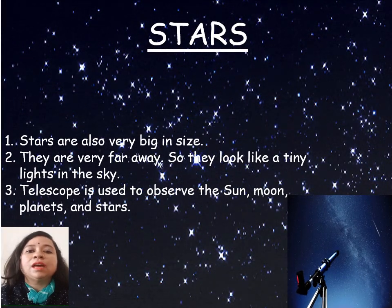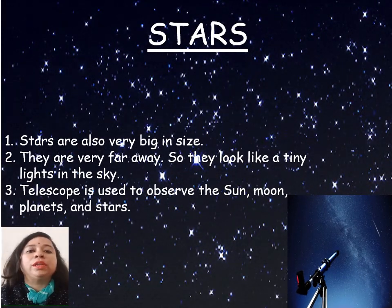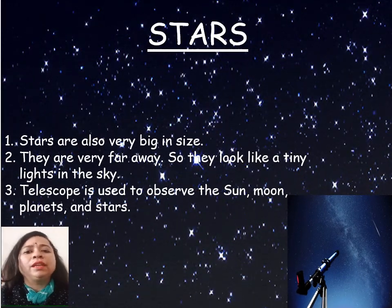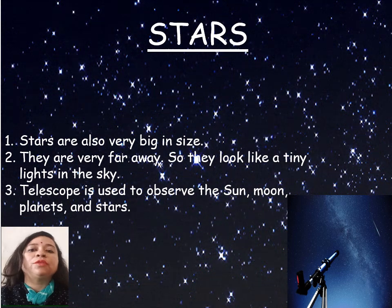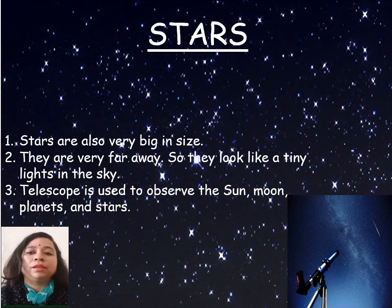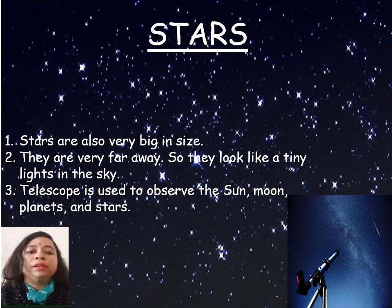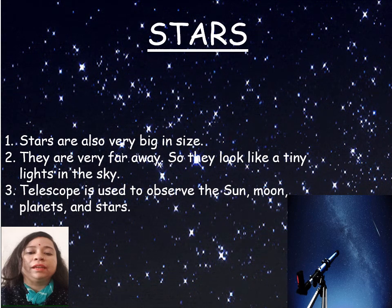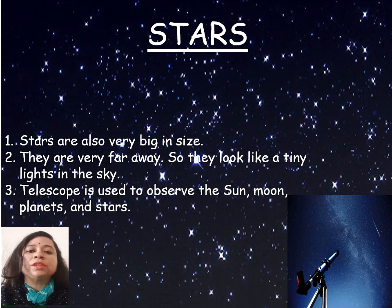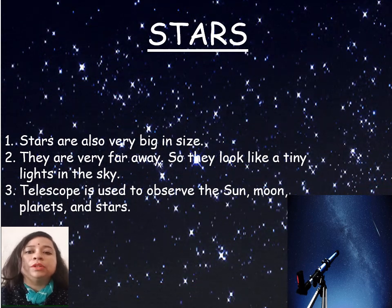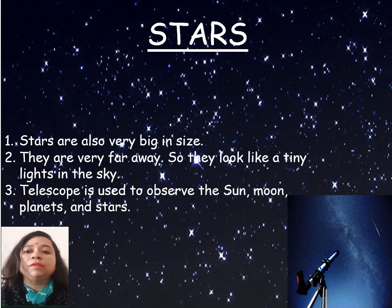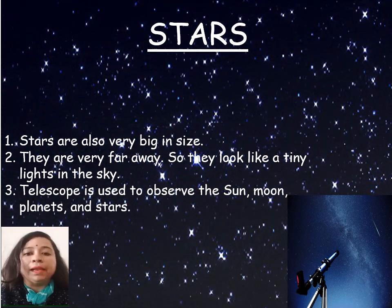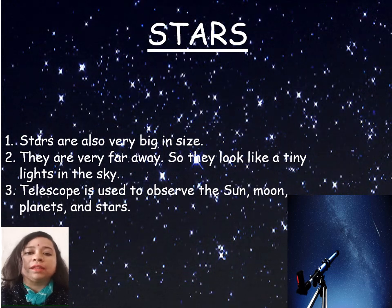Stars are also very big in size. They are very far away from earth, so they look like tiny lights in the sky. We use a telescope to observe the sun, moon, planets and stars.